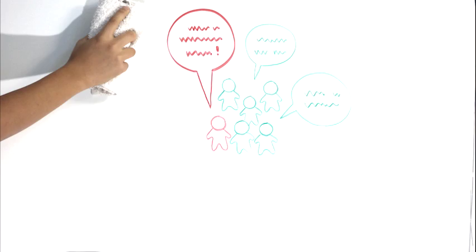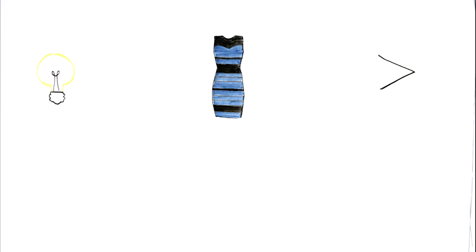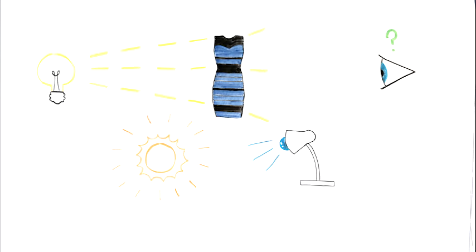Amidst the several theories surrounding the dress controversy, there is a leading explanation for the internet sensation. It turns out that our interpretation of the color of the dress is due mainly to our perception of the background light. In the image of the dress, the background is simply a bright color which creates an area of confusion as to whether that light is natural sunlight or indoor lighting. This is also where the color constancy we talked about before comes in.